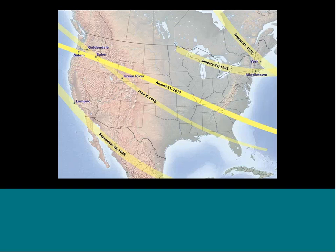Here is the path of the eclipse coming this August 21st. You can see that Baker, Oregon was in the path both in 1918 and in 2017. In addition to the path of totality — where the moon entirely covers the sun — the whole United States, Canada, and Mexico will be covered by a partial eclipse, where the sun is only partly covered by the moon.